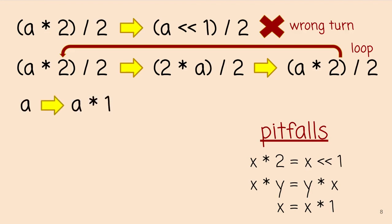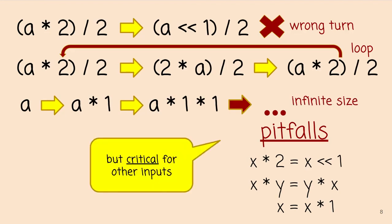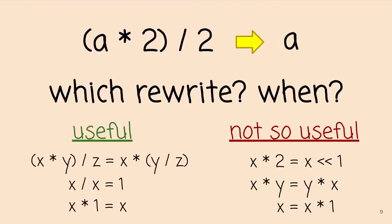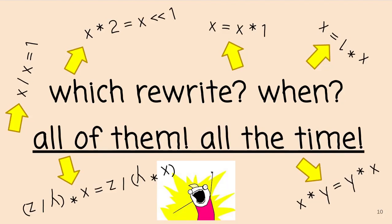These rules present pitfalls for rewriting in general, but they might be critical in some cases — commutativity or adding a multiply-one might be needed to enable other rules. This begs the question: which rewrite do you apply when? Equality saturation is a technique that says you can apply all of them all of the time simultaneously. This avoids the problem of rewrite choice or phase ordering, as it's referred to in the compilers literature. Simultaneous rewriting sounds really expensive, but we'll see how the E-Graph data structure allows you to do this relatively efficiently and compactly.